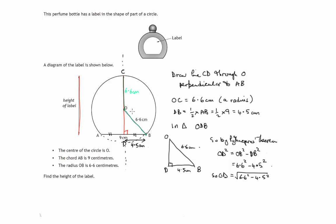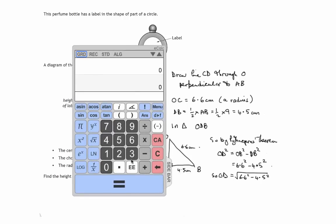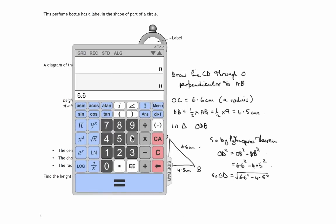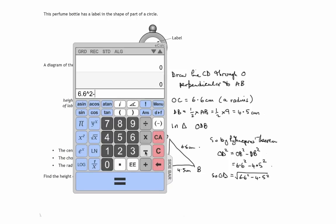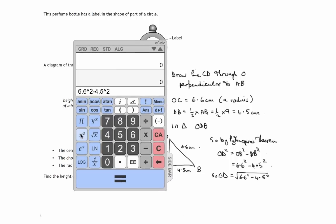So I think we've finally done this once we've calculated this. We've done all that we need to find the height DC. The 6.6 plus whatever this answer is. So let's do the calculation. We've got 6.6 squared minus 4.5 squared.